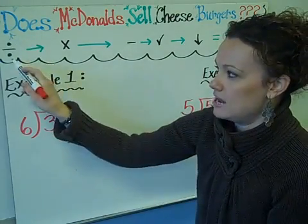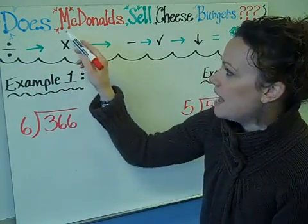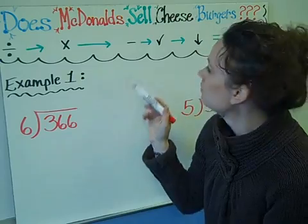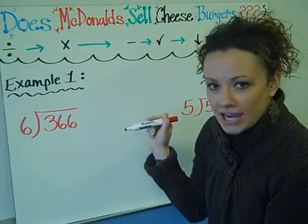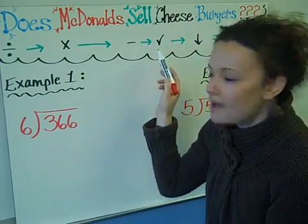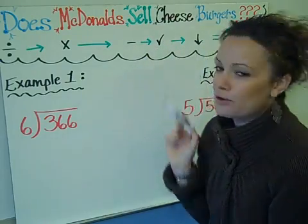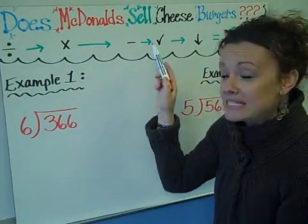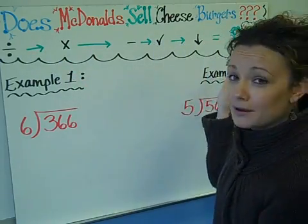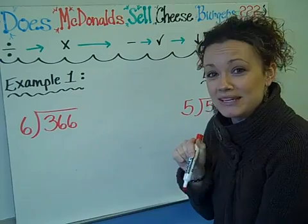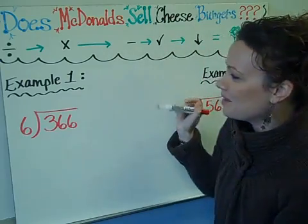All right, so let's look at the first letter of each of the words. The D in 'does' is going to stand for division. The M stands for multiplication. The S for subtraction. The C for check. The B for bring down. And if you follow all of these steps in this particular order, it will make for a very happy student and a very happy teacher.